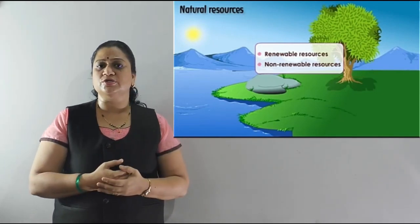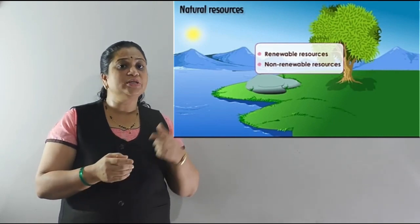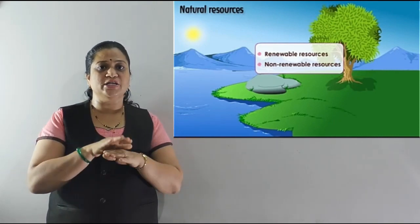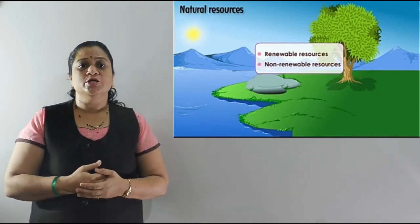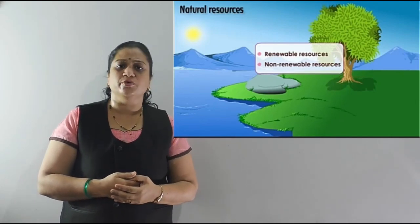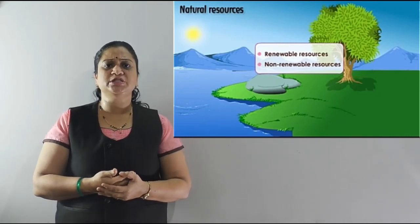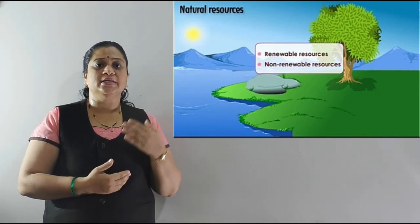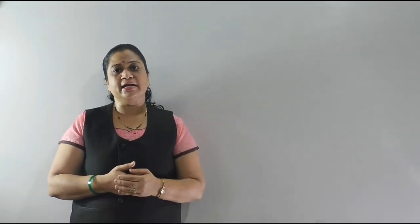Renewable resources are the resources which will never get exhausted from the earth. Non-renewable resources — referred to in your textbook as non-living or abiotic resources — are resources which don't have life in them and will get exhausted from the earth one day. So this is about the classification of natural resources. Today we covered natural resources and the classification of natural resources. Thank you.